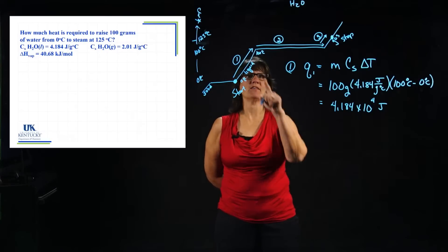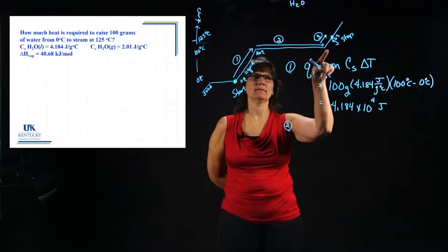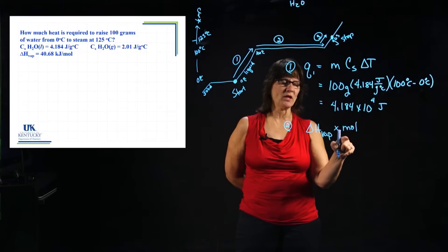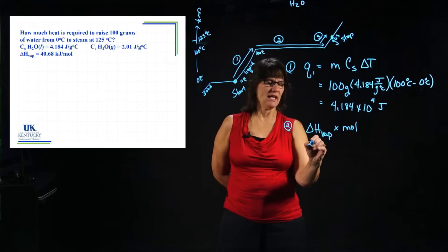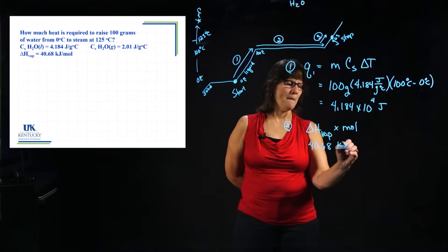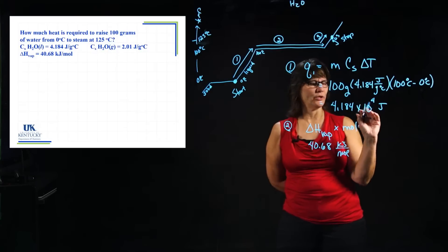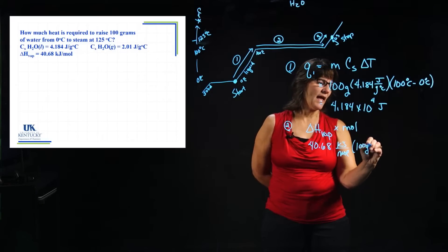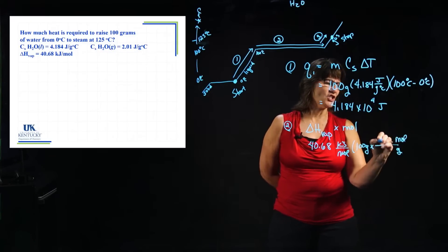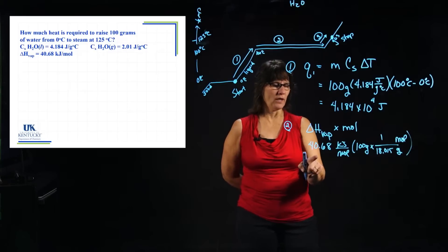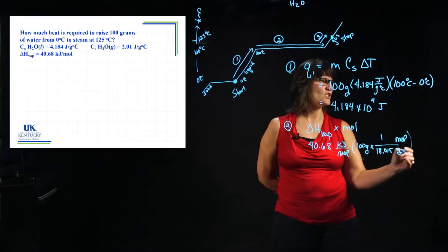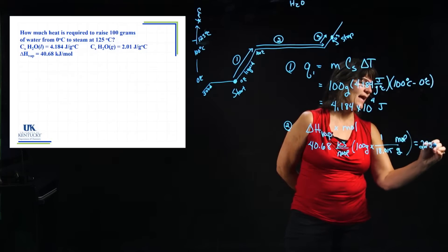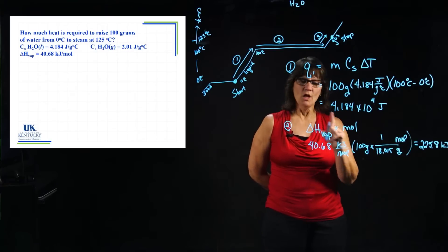For Q₂, the second leg of the journey, we are boiling — converting liquid to gas — so we need delta H of vaporization. The value is 40.68 kJ/mol. I don't have moles; I have 100 grams, so I need to convert: 100 grams divided by the molar mass of water gives the number of moles. Multiplying 40.68 kJ/mol by that number of moles gives Q₂ = 225.8 kilojoules.